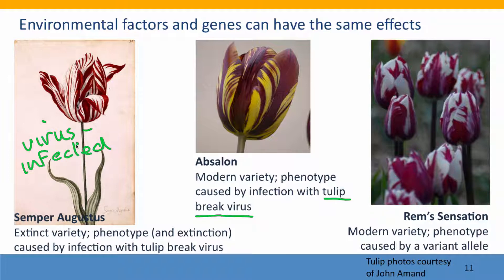This wasn't realized at the time. It's the virus that's causing this dramatic striped coloration that was so valued. Unfortunately, we still like these tulips, but the virus greatly reduces the viability of the plants. It's very hard to make any money selling tulips that are infected with a lethal virus. This is a modern variety of the same tulip — a tulip that is infected with the virus.